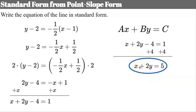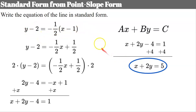This is the same line as the one written in point-slope form. These are equivalent equations — they represent the same line just written in different forms.